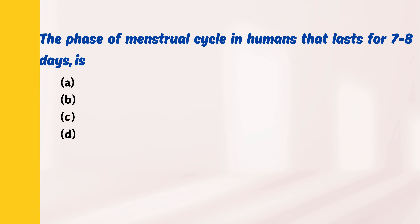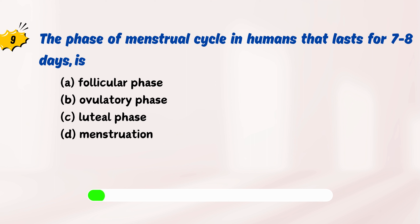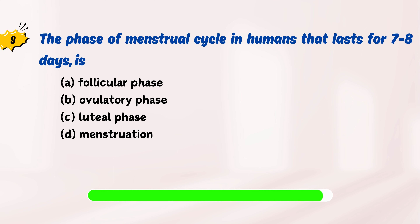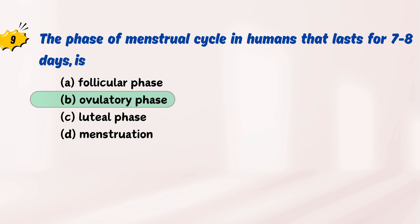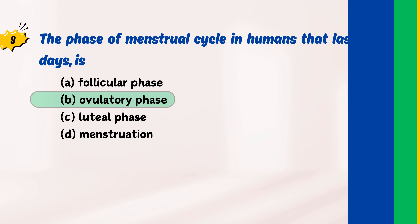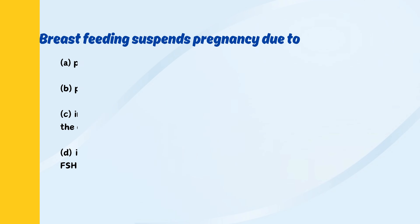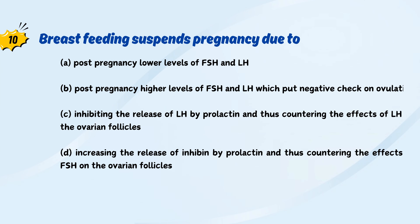The phase of menstrual cycle in humans that lasts for 7-8 days is? Breastfeeding suspends pregnancy due to?